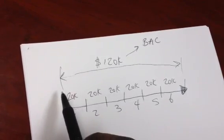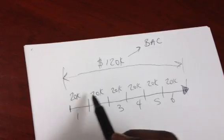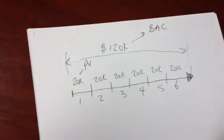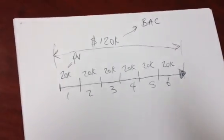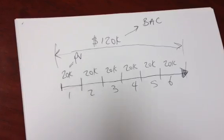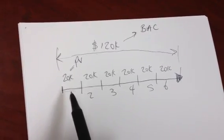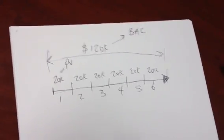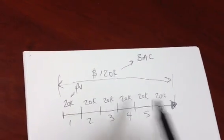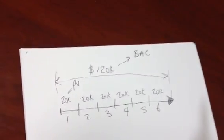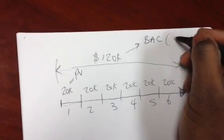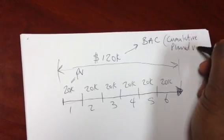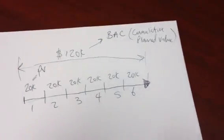Now, what do we refer to this $20,000 every month as? Well, each of these 20Ks, we refer to those as the planned value, PV, for that month. When you think of planned value, you need to think about how much work you're going to get done within a particular amount of time. So, what you're saying by this is in month one, I'm going to get $20,000 worth of work done within that time frame of a month. The same thing for all the others. But if you add all of these up, you get the BAC. So, BAC is also known as your cumulative planned value.